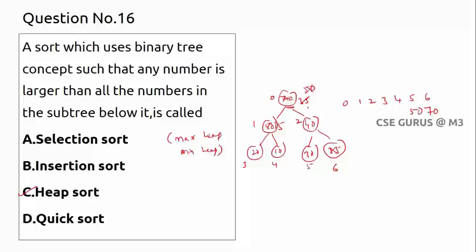Next, take element 30 and place it at the root. Check: among 30, 35, and 40, the highest is 40, so 40 comes up. Then 40 is extracted. The next element 10 is placed at the root; check 10, 35, and 30 — 35 is highest, so 35 comes up. Then 10 vs. 20: 20 wins, so 20 goes up and 10 goes down.